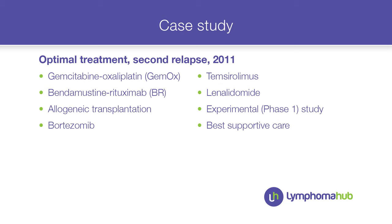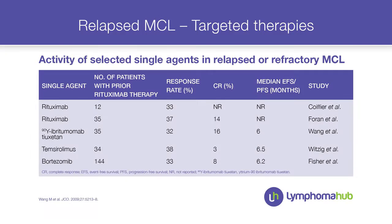The options were similar to first relapse: another R-chemo combination, allogeneic transplant, or molecular targeted therapy. We decided not to go for allogeneic transplant because of the patient's impaired general status — he was 68 and not fit enough to accept the additional risk. We decided to move on to molecular targeted approaches.